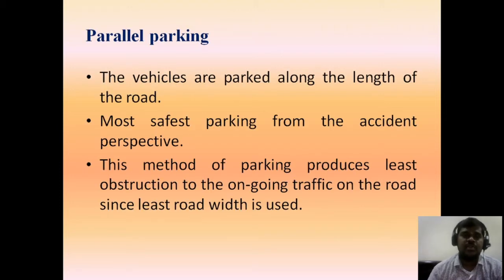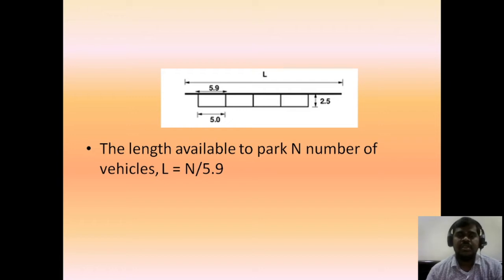The first type in on-street parking is parallel parking. The vehicles are parked along the length of the road. This is the safest parking from an accident perspective and produces the least obstruction to ongoing traffic since the least road width is used. As shown in the figure, the vehicles are parked in this manner. The total length is calculated by L = N/5.9, where N is the total number of vehicles parked.